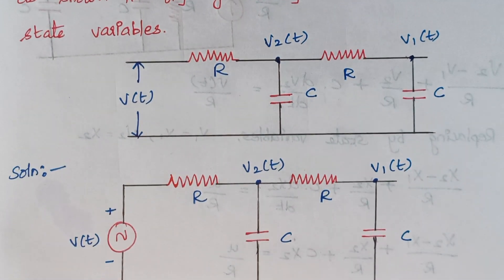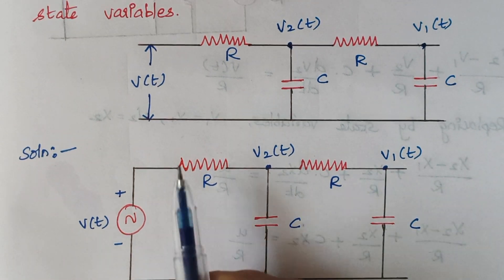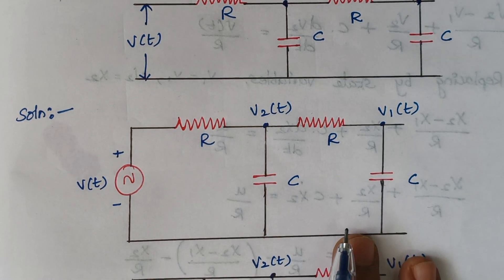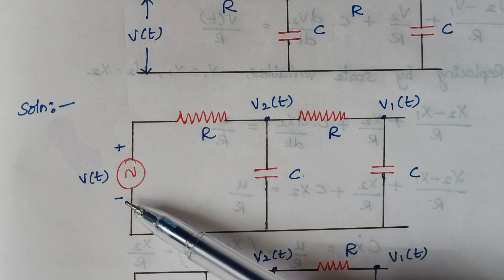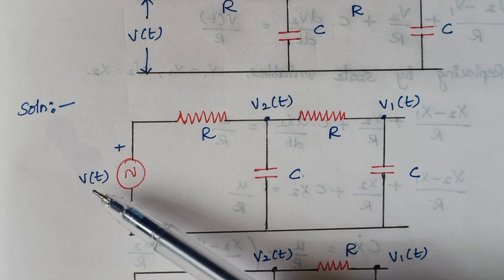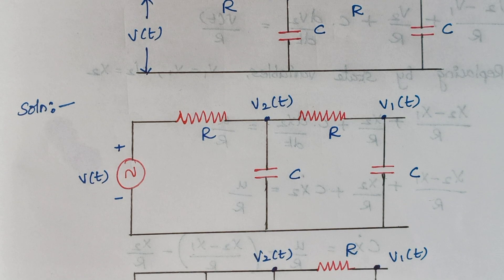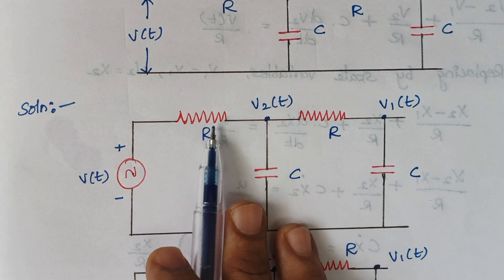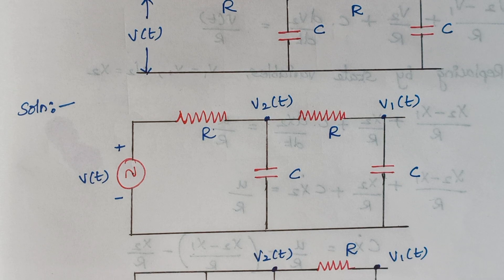Now we are proceeding with the solution. This is your voltage source V(t). I am completing the circuit by drawing a voltage source here. This is V2(t) and the rest of the things remain the same. In the next step, we are converting the voltage source in series with the resistor to a current source in parallel with the resistor.